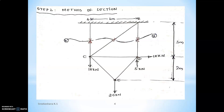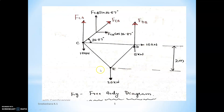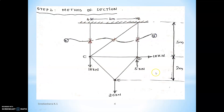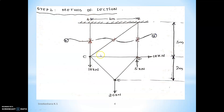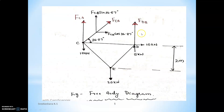This condition must be satisfied when you are following the method of section: the maximum unknown members allowed is three, and out of three members, two members should be having one common point. So I am cutting this particular truss into two parts. Next, I am considering only one section — removing the other section. When you are cutting the unknown members, the unknown members should be assumed as tensile force. Here I have assumed tensile: FCA, FCB, and FDB. These are the unknown forces we are going to determine using method of section.